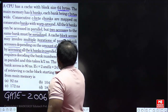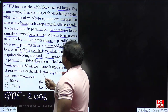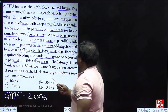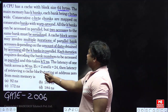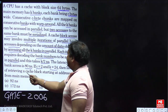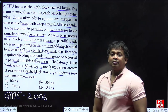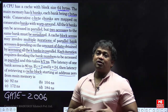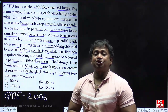Each iteration requires decoding the bank numbers to be accessed in parallel, and this decoding takes K/2 nanoseconds. The latency of one bank is 80 nanoseconds. Given the C and K values, we need to find the latency of retrieving the cache block starting from address 0.